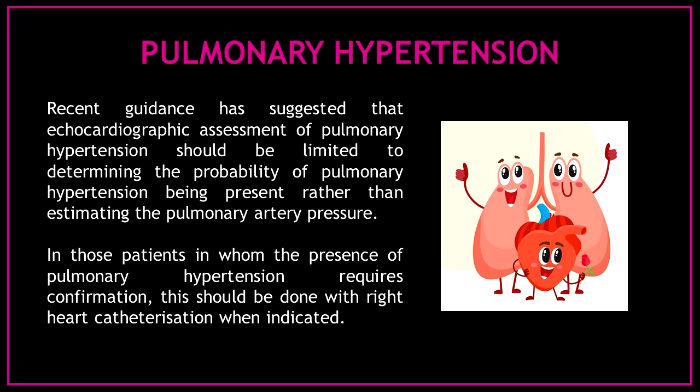Recent guidance has suggested that echocardiographic assessment of pulmonary hypertension should be limited to determining the probability of pulmonary hypertension being present rather than estimating the pulmonary artery pressure. In those patients in whom the presence of pulmonary hypertension requires confirmation, this should be done with right heart catheterization when indicated.